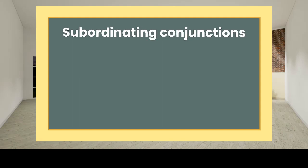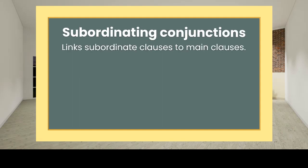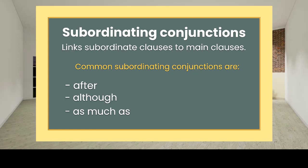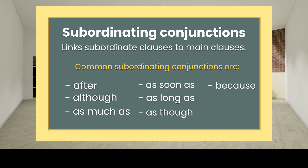Subordinating conjunctions link subordinate clauses to main clauses. Common subordinating conjunctions are: after, although, as much as, as soon as, as long as, as though, because, how, and if.